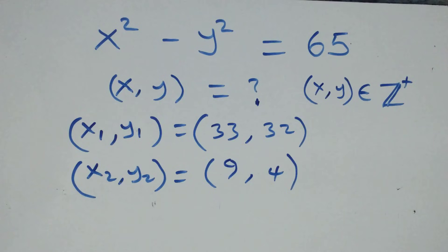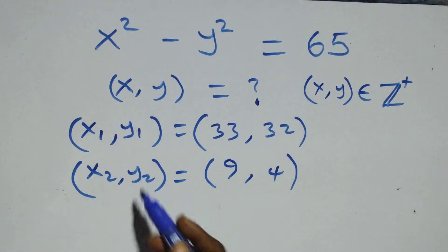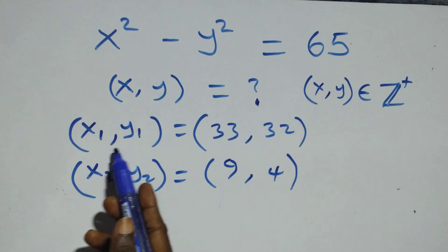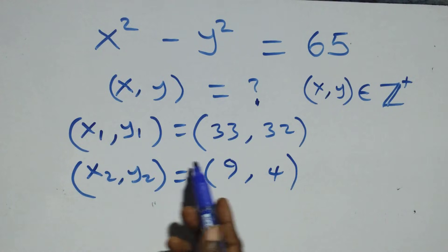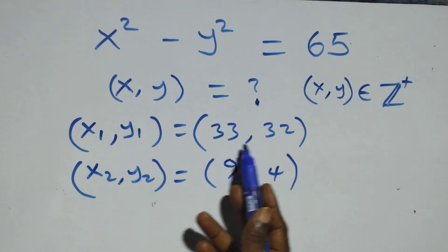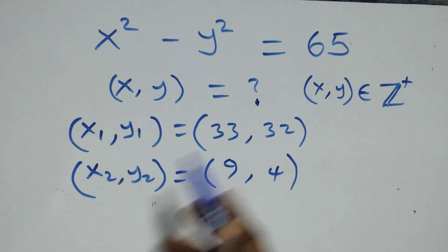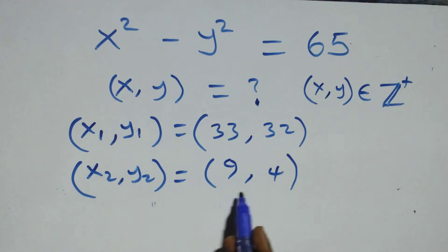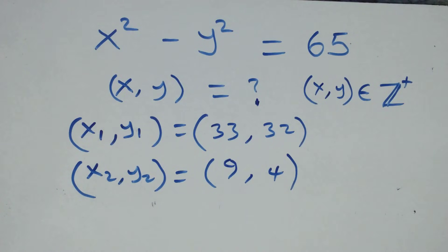In this problem, we have two sets of solutions: the first solution is (x₁, y₁) equals to (33, 32), and the second solution is (x₂, y₂) equals to (9, 4).